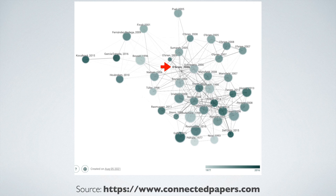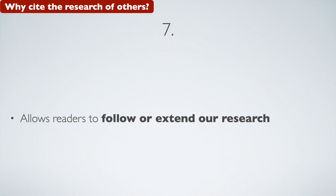And number seven, we cite the research of others to allow readers to follow or extend our research. Many researchers will use the sources cited in the literature to pursue their own research interests, for example, by taking their search in a different direction.